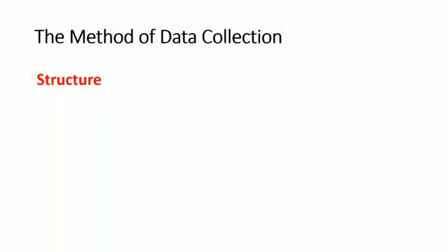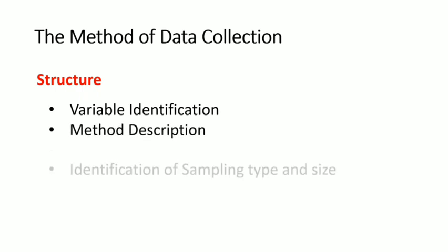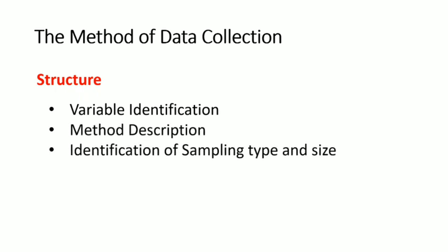This section has the following components: variable identification, method description, identification of sampling type and sample size, and the data type is also identified. Let us look closely into each and every component in this section.